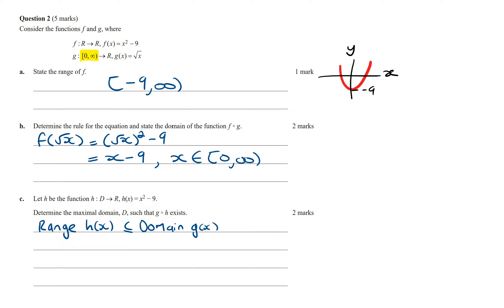In other words, we want the range of h of x to equal or be a subset from 0 to infinity. And so looking at the graph of x squared minus 9, the values where the function is going to be from 0 to infinity is going to be in these regions. The x intercepts of this function is going to be at minus 3 and at 3.